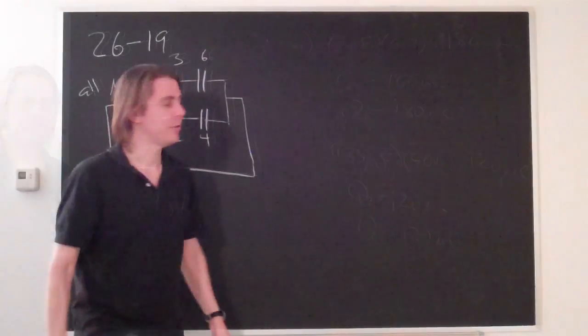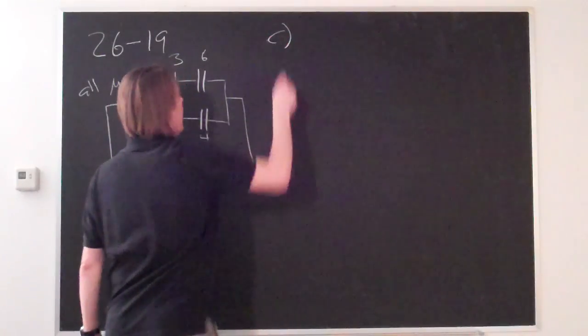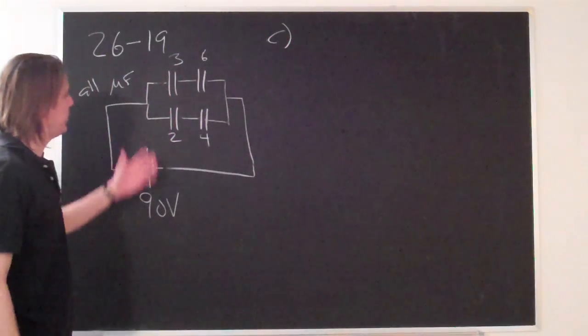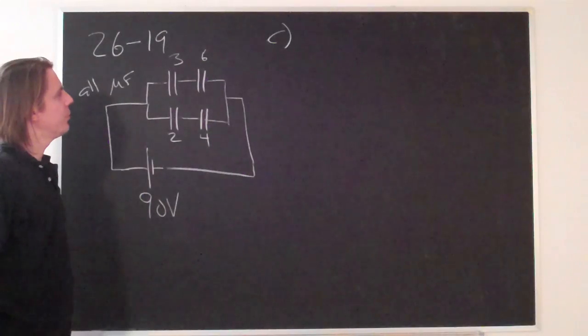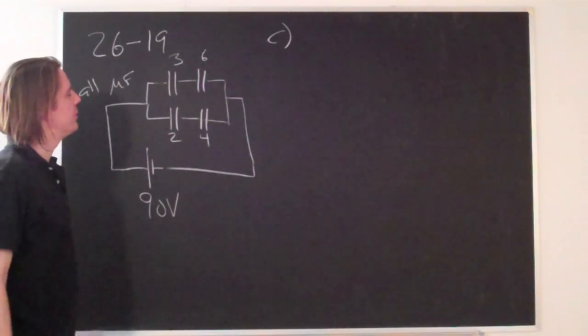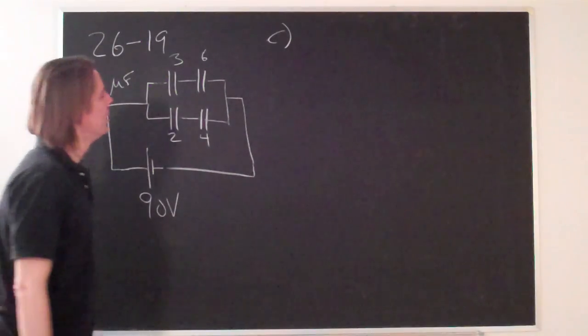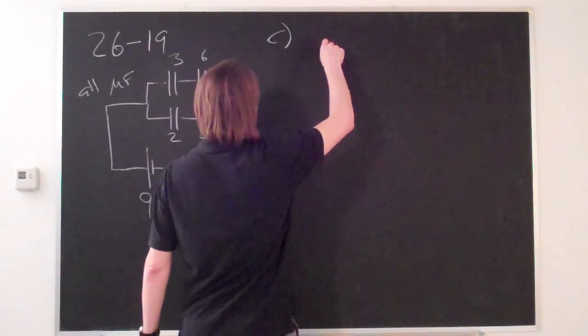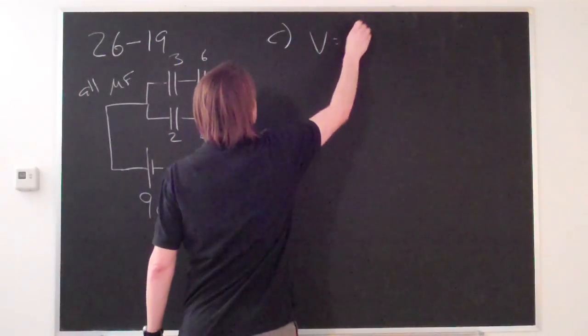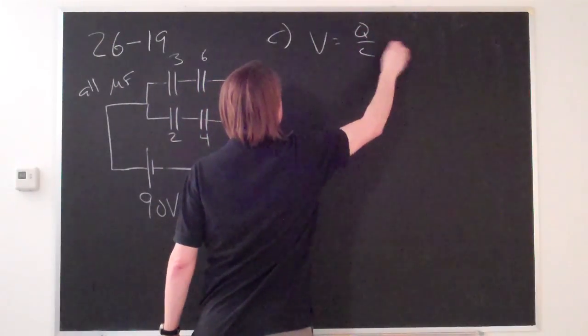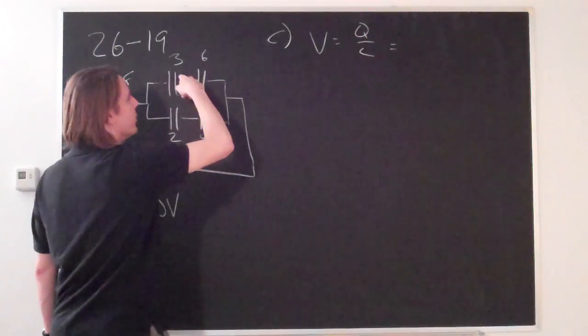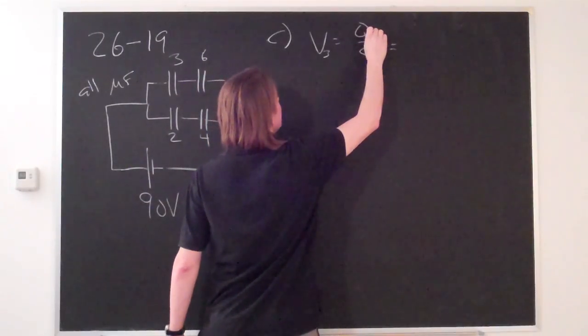That's the answer to part B. Now part C asks for the voltage across each capacitor. We're in the fortunate position of knowing the capacitance and the charge, so the voltage is straightforward: CV equals Q, so V equals Q over C.